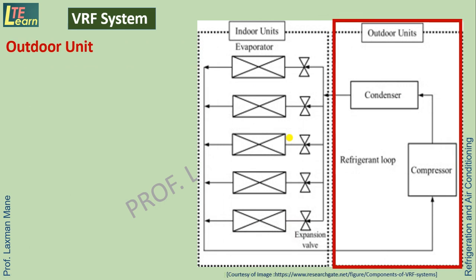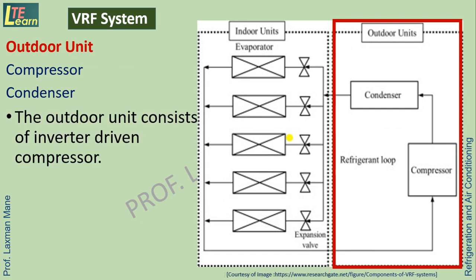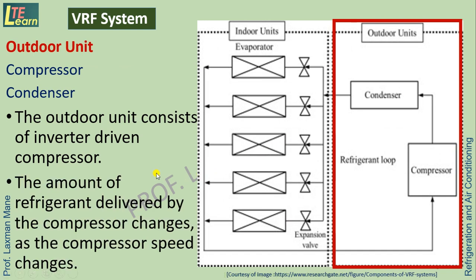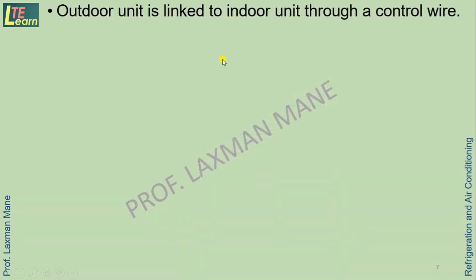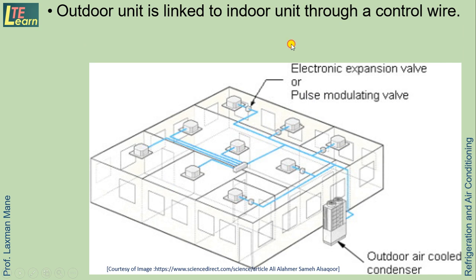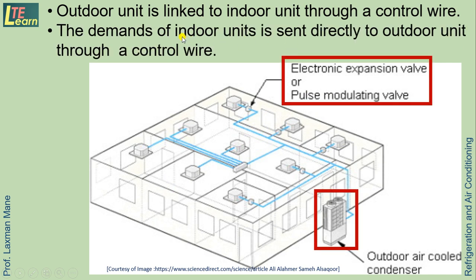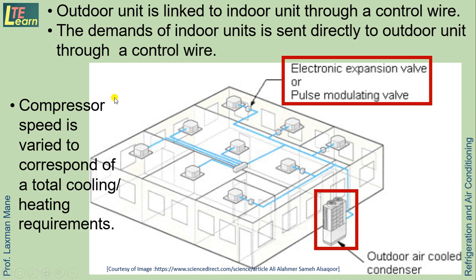The VRF system has an outdoor unit which consists of an inverter-driven compressor. The amount of refrigerant delivered by the compressor changes as the compressor speed changes. The outdoor unit is linked to the indoor unit through a control wire, and the demand of the indoor unit is sent directly to the outdoor unit through this control wire. Compressor speed is then varied to correspond to the total cooling or heating requirements.